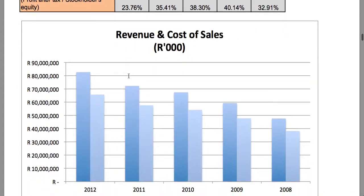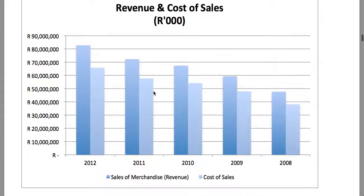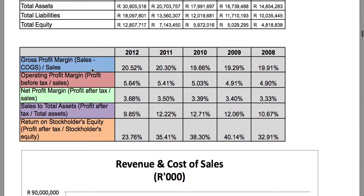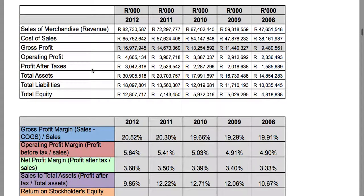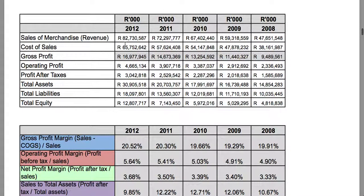Moving over to the revenue and cost of sales of the company, we'll see that both of these grew pretty much in proportion. In 2012 the total revenue of the company was about 82 to 83 billion Rand, and in 2008 it was about 47 billion Rand.